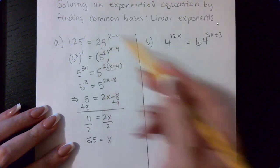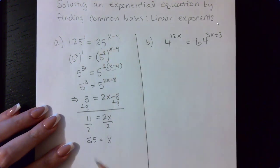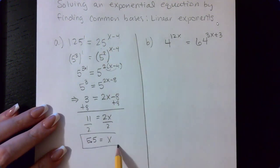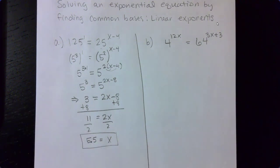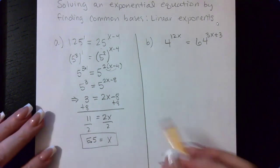These are exponents. X was originally in the exponent. So X can be anything. It doesn't have to necessarily be positive, even though we did get a positive value there.